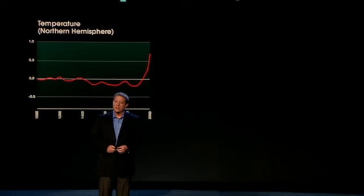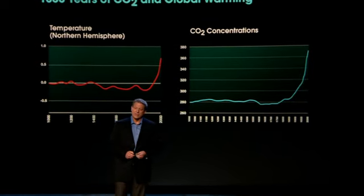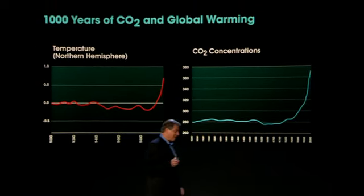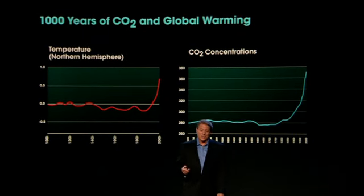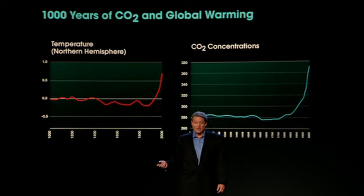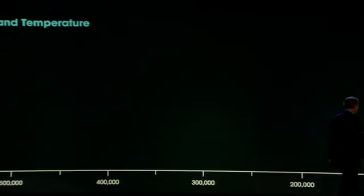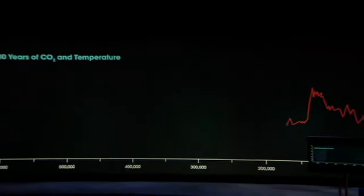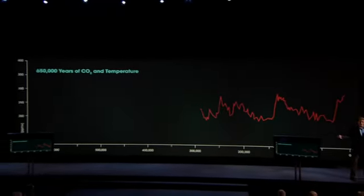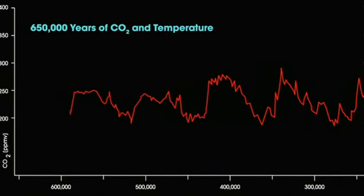If you look at a thousand years of temperature and compare it to a thousand years of CO2, you can see how closely they fit together. Now, a thousand years of CO2 in the mountain glaciers is one thing, but in Antarctica they can go back 650,000 years.